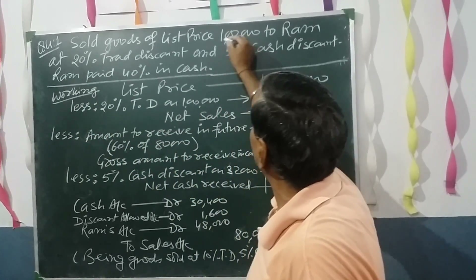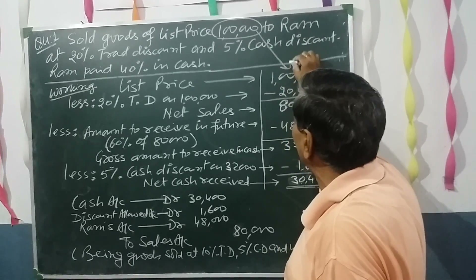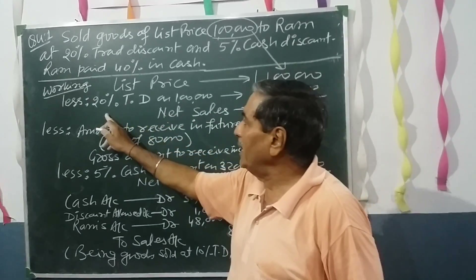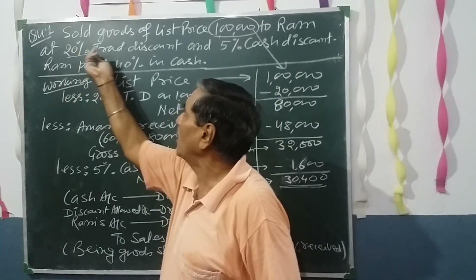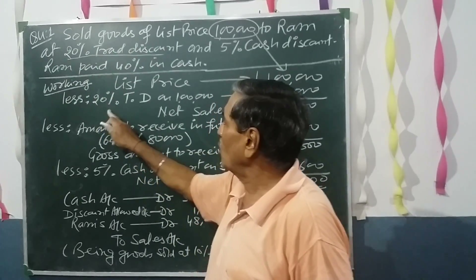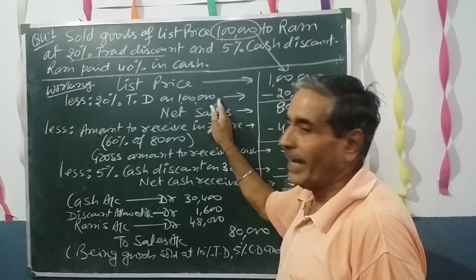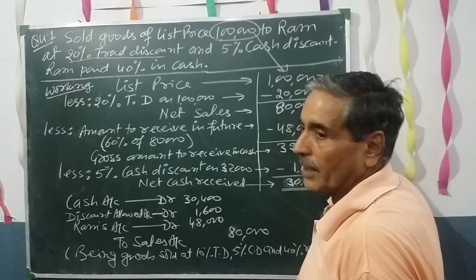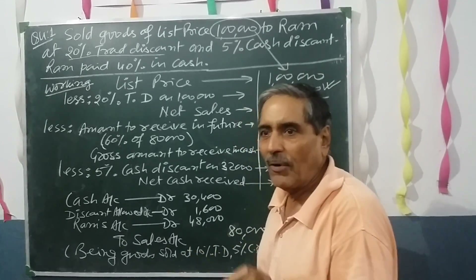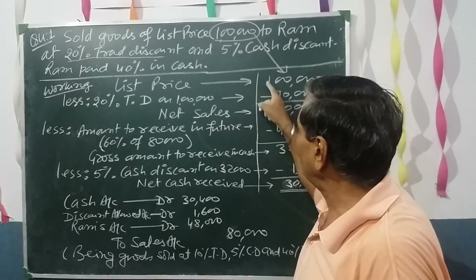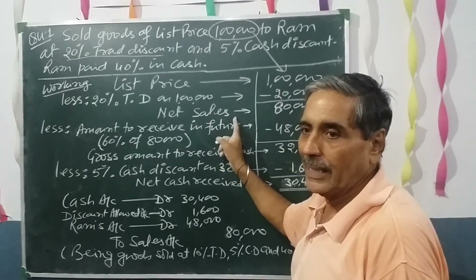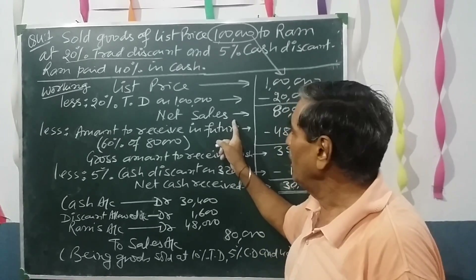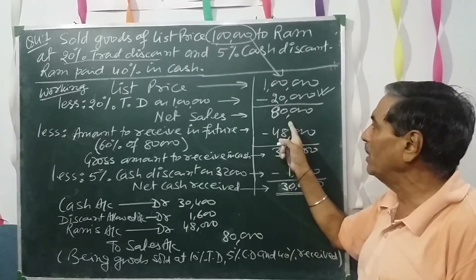The working: list price of the goods is ₹1 lakh — write that here. Trade discount given in the question is 20%, so 20% trade discount on the list price of ₹1 lakh is calculated, which comes to ₹20,000. This ₹20,000 is subtracted from the ₹1 lakh list price. After subtracting we get net sales — we sold goods of ₹1 lakh at a trade discount of 20%, so the net amount we are supposed to get from Ram is ₹80,000.